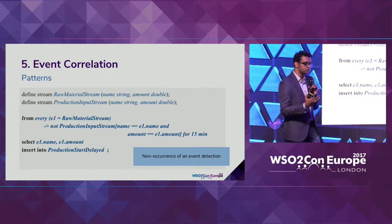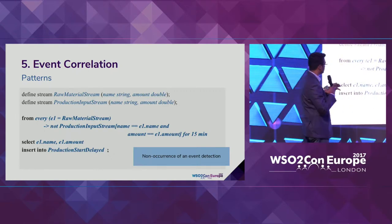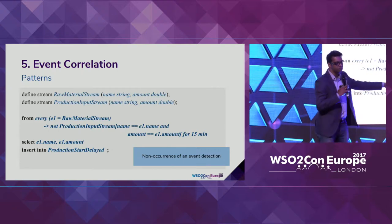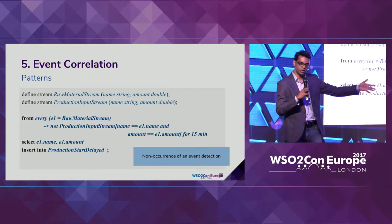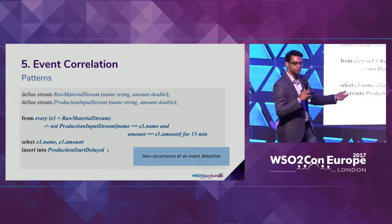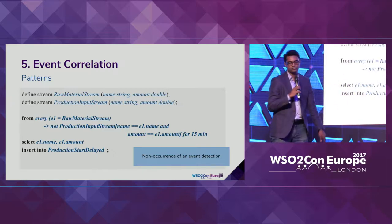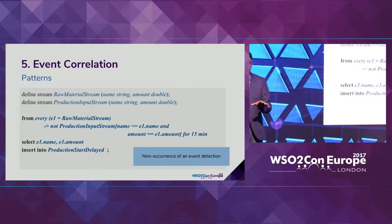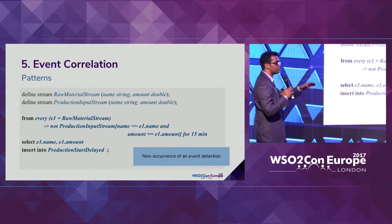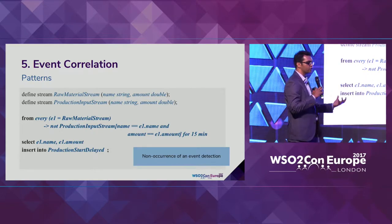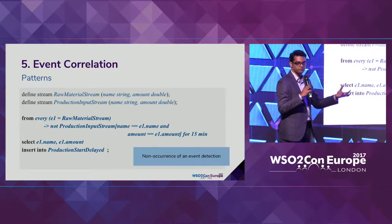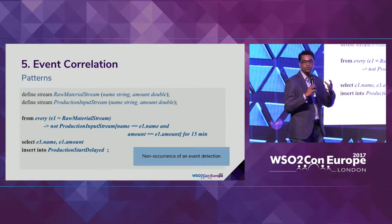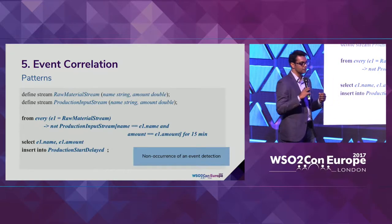We can also invert the logic: if production did start within 15 minutes, trigger an alert. Using 'not' or removing 'not' lets us decide between these cases. This helps you identify different things happening in your organization and build adaptive applications that know the situation and react immediately.